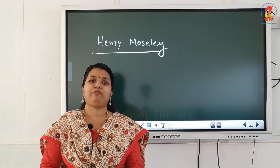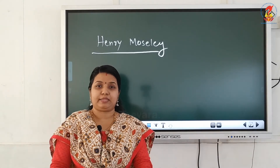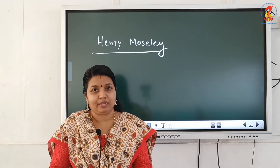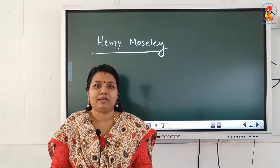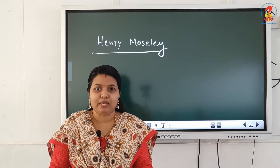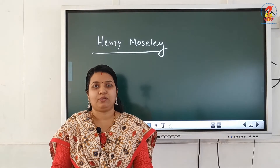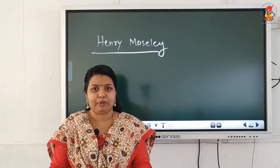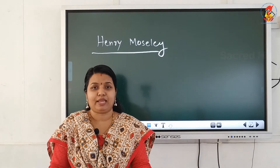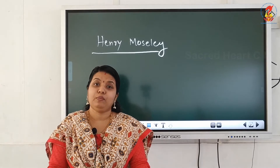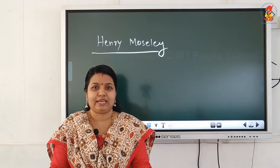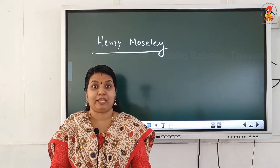Atomic number is a more fundamental property than atomic mass. Why were earlier classifications based on atomic mass? At that time, it was believed that atomic mass is the fundamental property of an atom. Atom was considered to be indivisible, and the concept of atomic number was not there. Later it was found that an atom can be divided into protons, electrons, and neutrons, and the number of protons or electrons was taken as the fundamental property — atomic number.